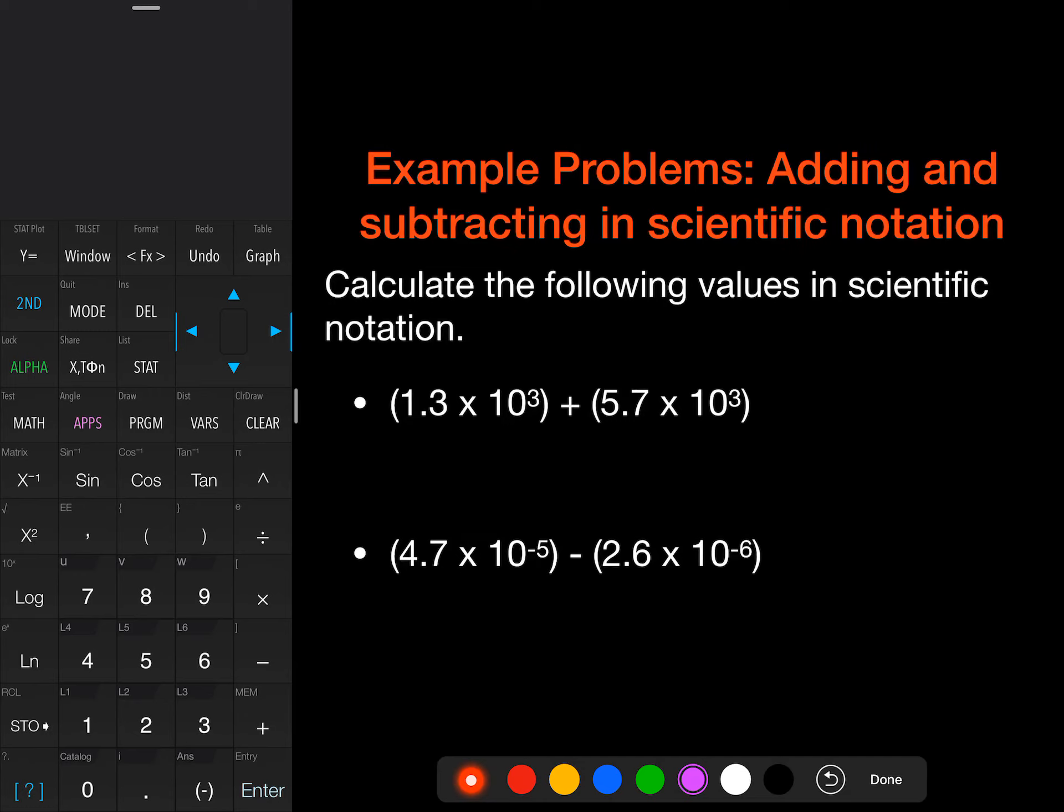Let's do adding and subtracting in scientific notation first. So we're going to add in the first one here. So we have 1.3 plus 5.7. So if I'm just doing that, we want to make sure that we're in the same exponent. So in this case, I have 10 to the third. So I'm good to go. So I can either punch this into my calculator, which I'll show you how to do in just a moment, or I can add these up. So 1.3 plus 5.7 is going to give me 7.0. And then our value is still going to remain times 10 to the third.